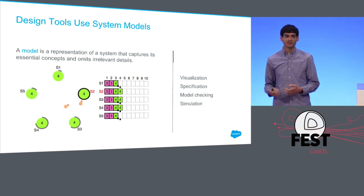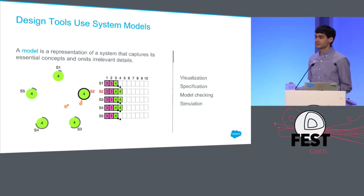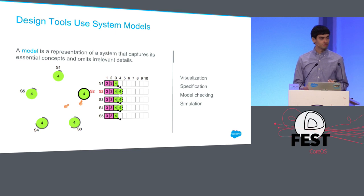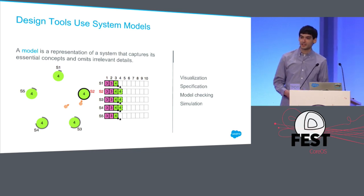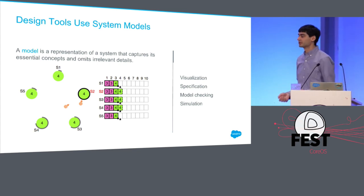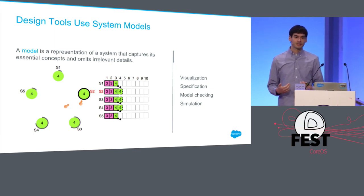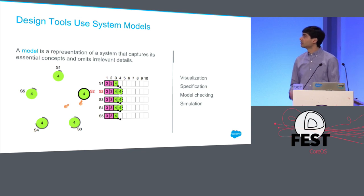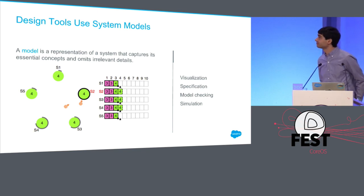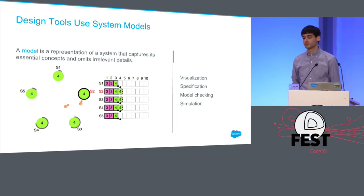This idea of modeling extends to all of these things. For specification: if you have too much detail in your spec, you're essentially dumping production code into a file — that's not reviewable. You need to get things down to the essential concepts. For model checking: if you have too much detail, it's not going to terminate — it'll be too slow. For simulation, given the same level of detail in a system model, simulation can produce useful results.